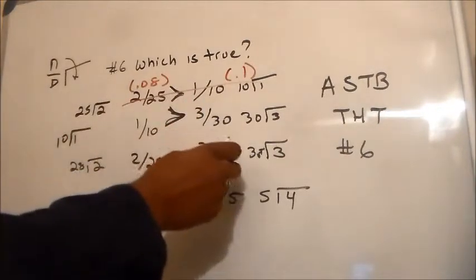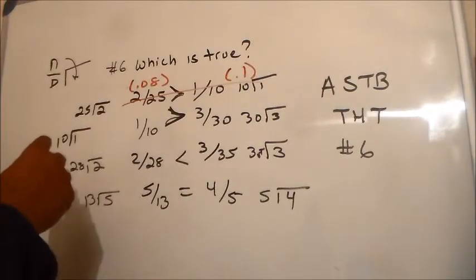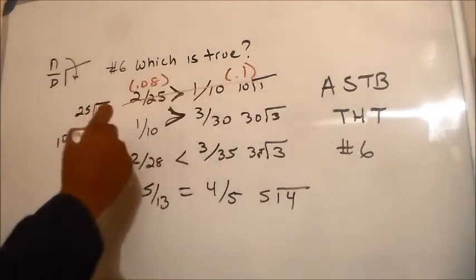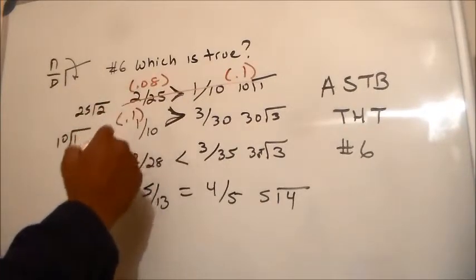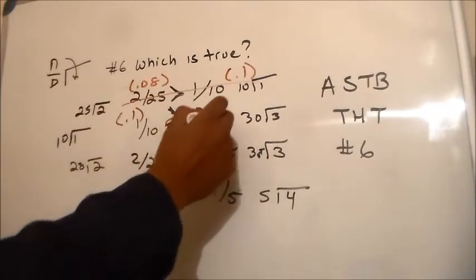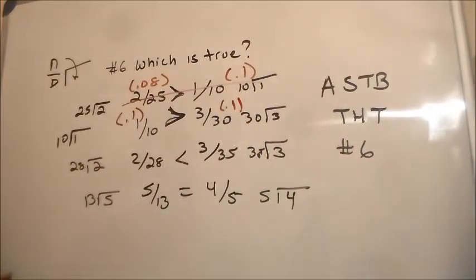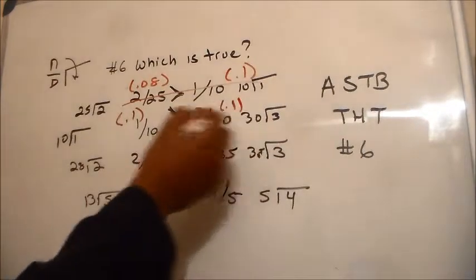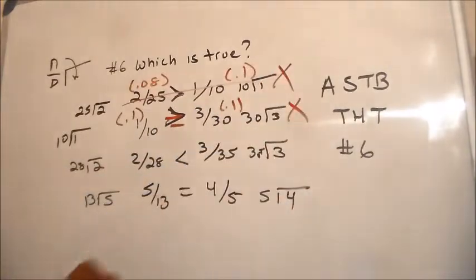This is an equivalent fraction like I said before. This is actually the same thing - 1/10, 1/10. So this is actually point 1, and this would actually come out to point 1. If I do 3 divided by 30, it's point 1. We get the same answer and this should be equal. This is not it. So A is not it, B is not it.